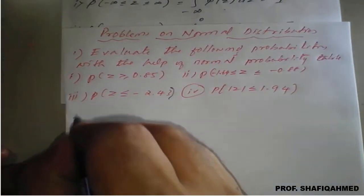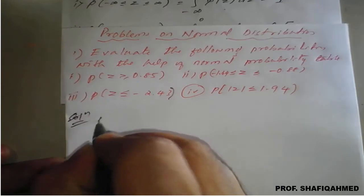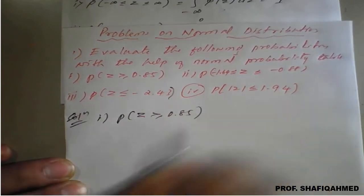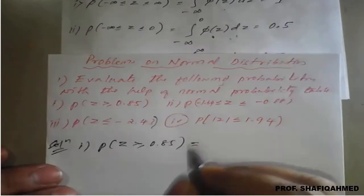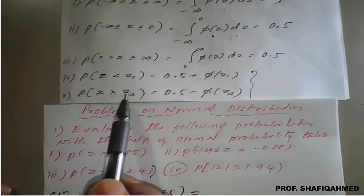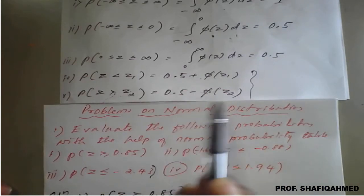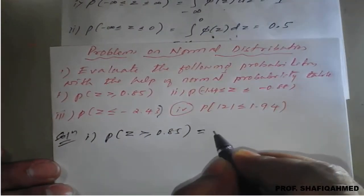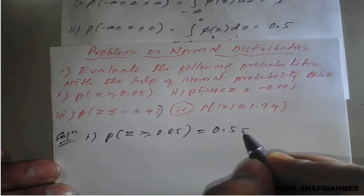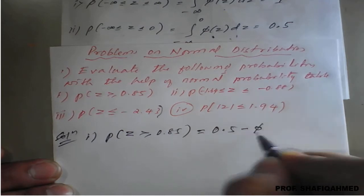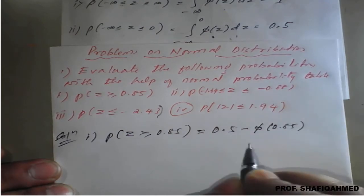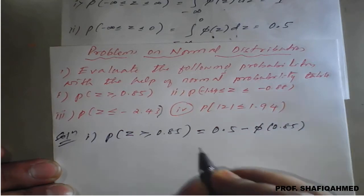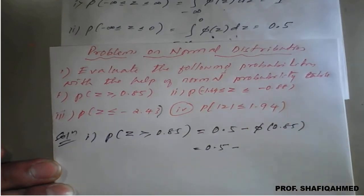First question solution: we need to calculate P(Z ≥ 0.85). This can be written using the formula for greater than as 0.5 minus phi(0.85), since for P(Z > z), we use 0.5 minus phi(z). So it becomes 0.5 minus phi(0.85).